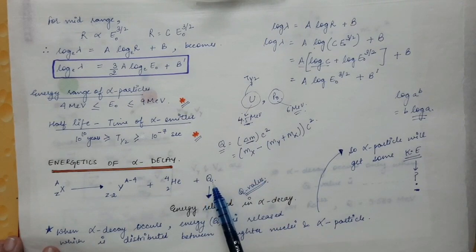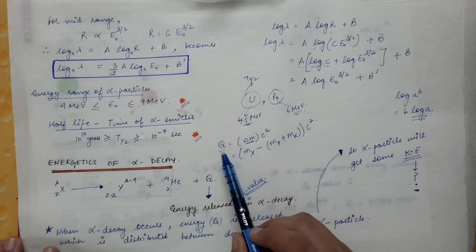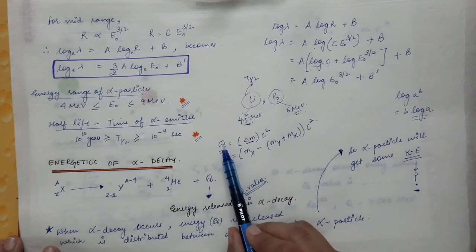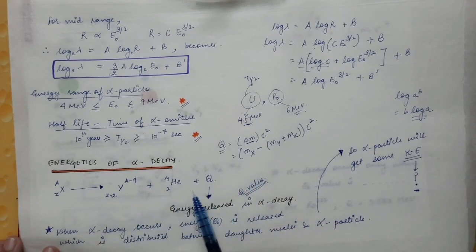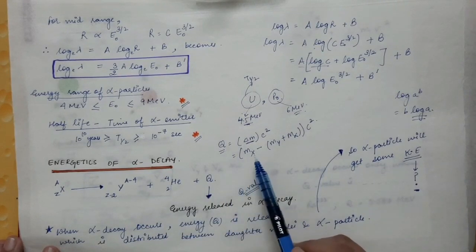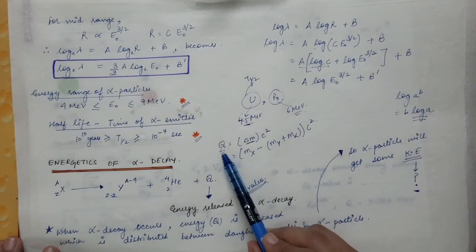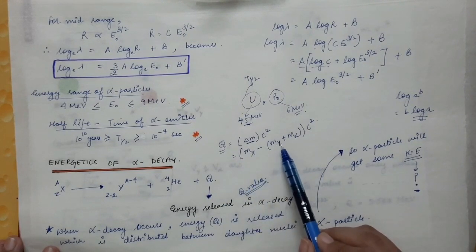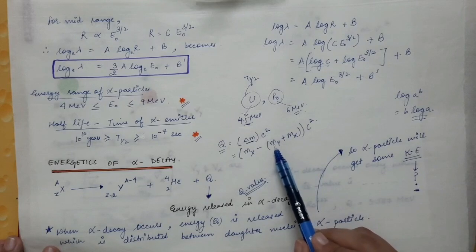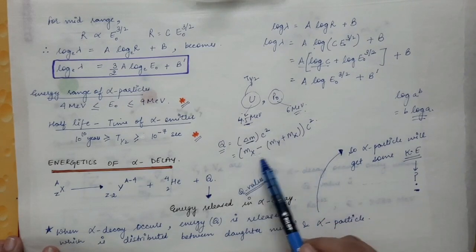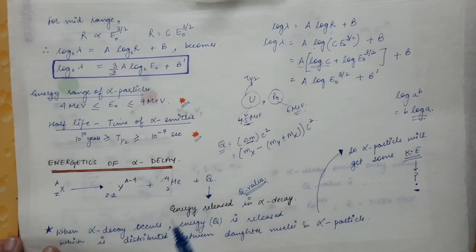Alpha decay is possible only when the energy released has a positive value. The Q value will be positive only when the mass of the parent nucleus M_X is greater than the sum of the masses of the products: M_Y plus M_alpha. Only then does alpha decay occur.